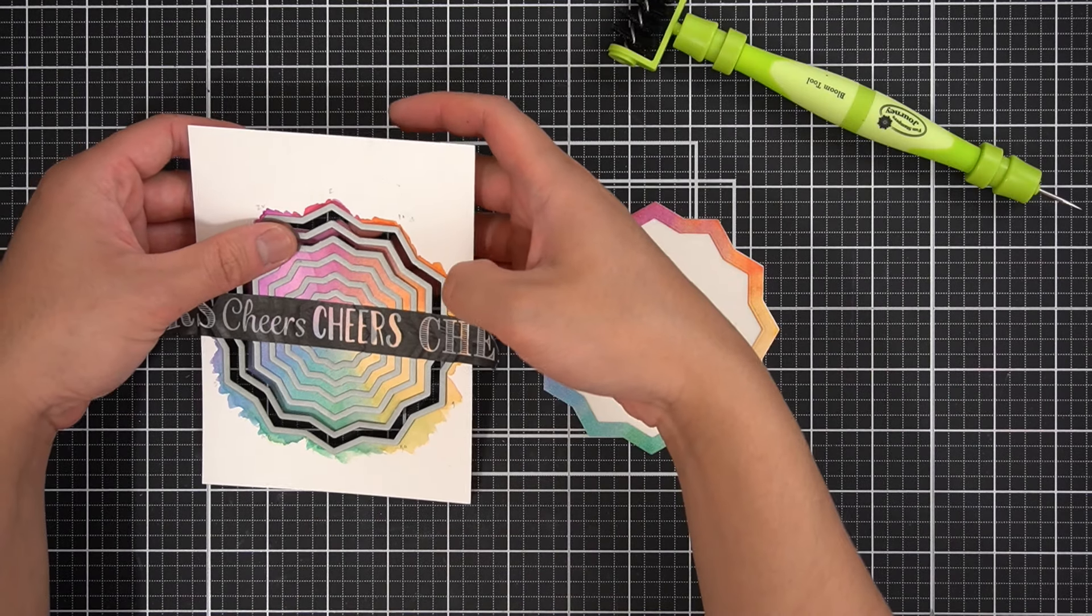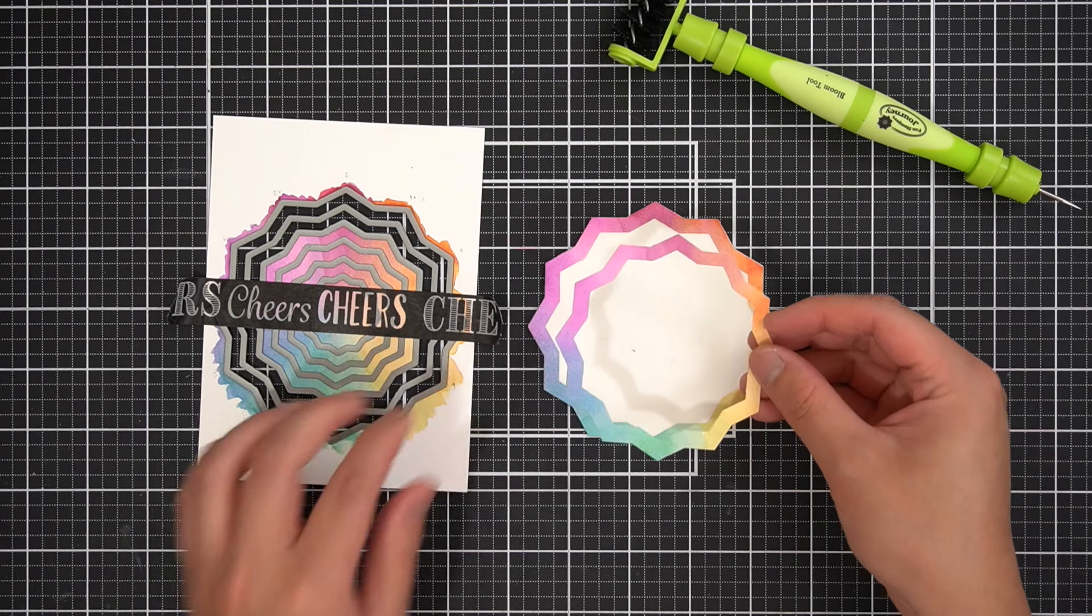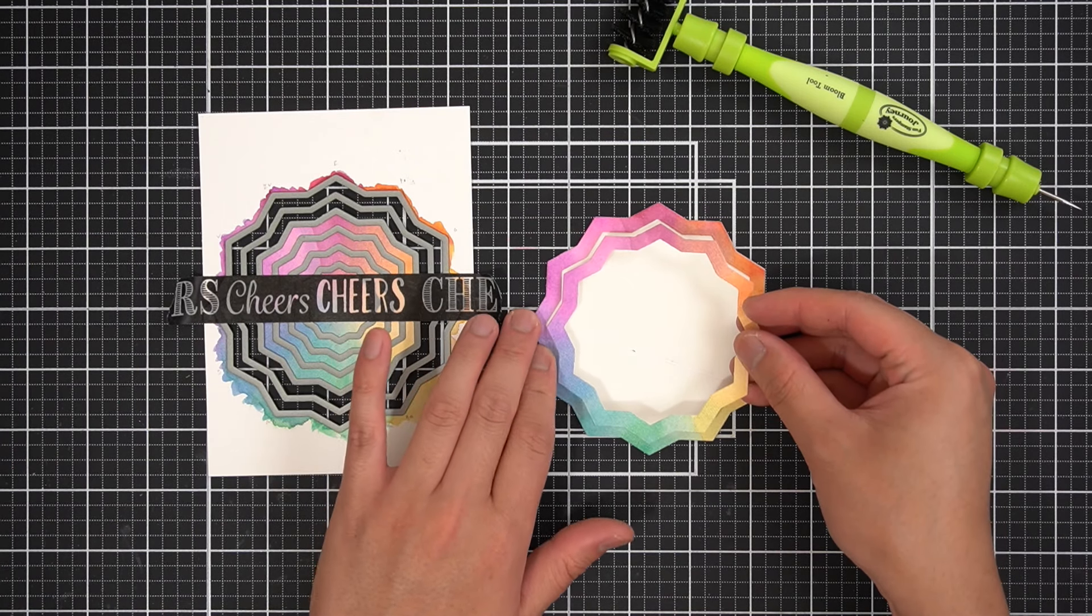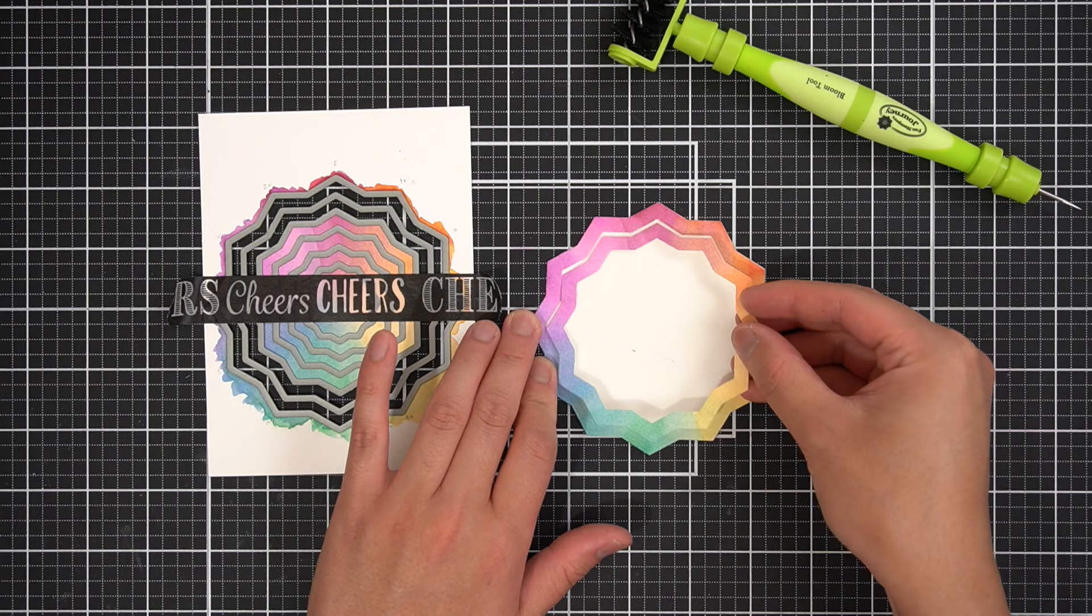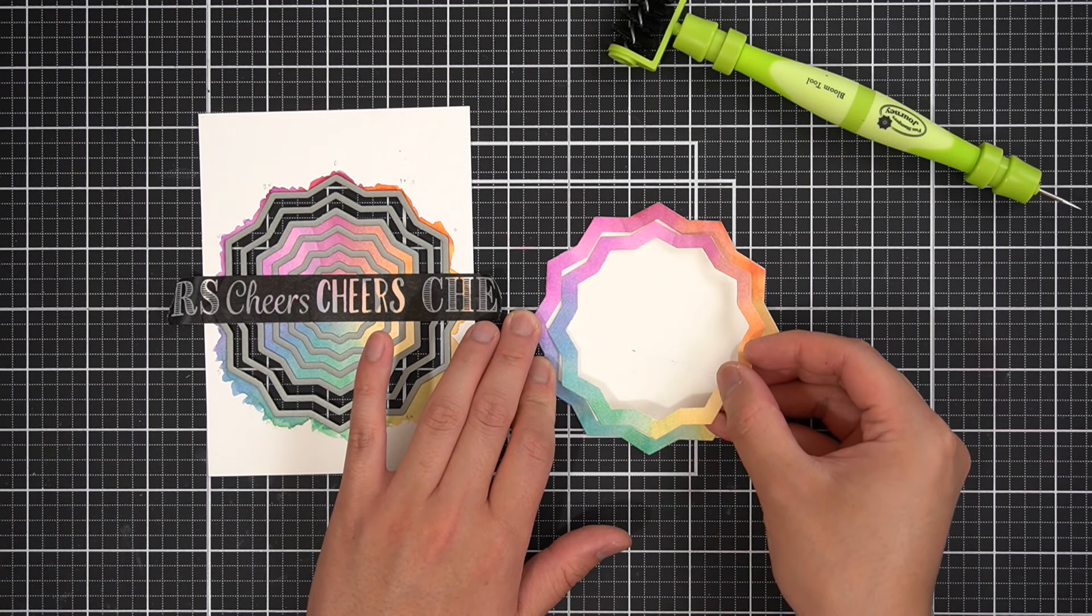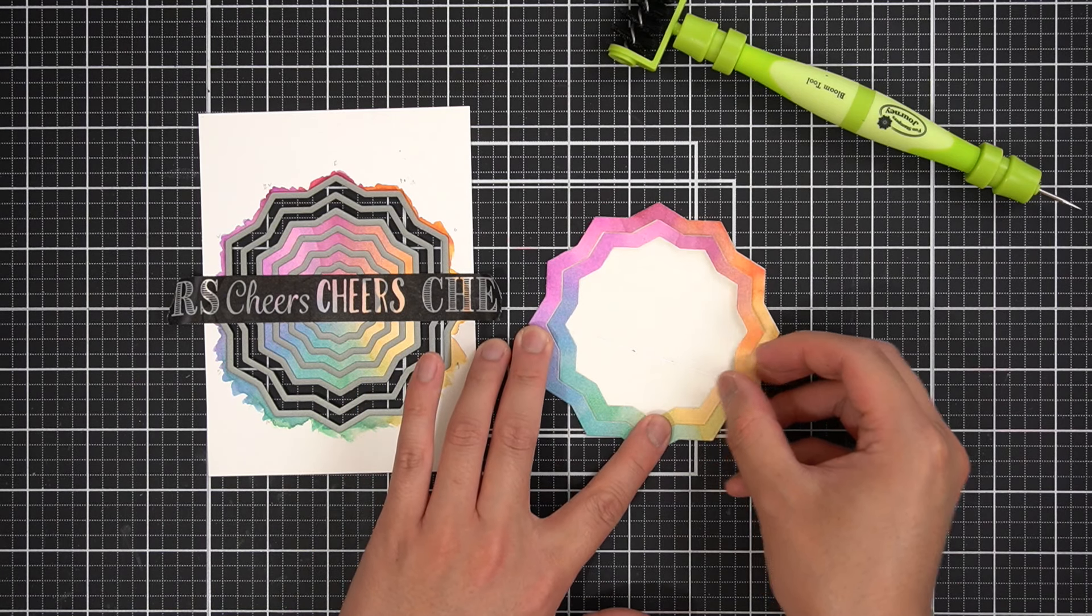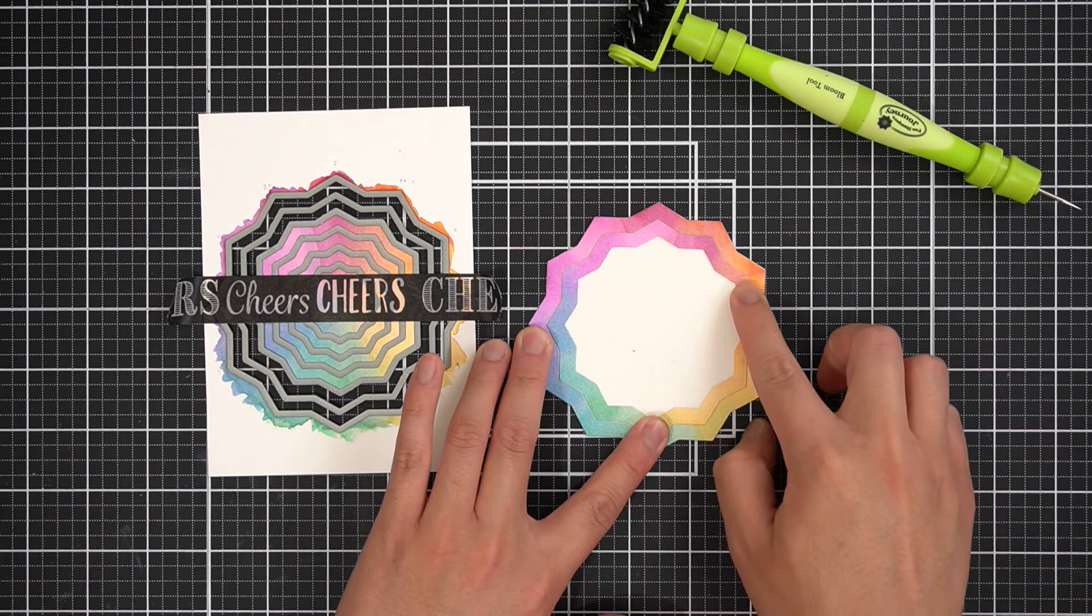Next, I'll take the second largest die cut out of the group. Then using the red area as my guide, I'll overlay and align the die to the red area that is already glued down. But instead of adhering it at this point, I'll rotate the die cut frame clockwise or to the right until you see where the die will perfectly nestle into the previous frame.